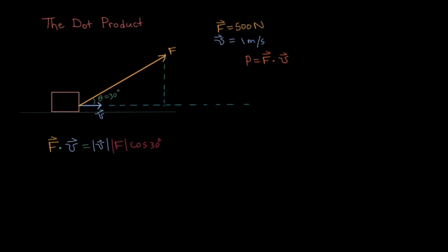The power, F dot v, is equal to v times F cos theta. In this case, theta is 30 degrees. Putting our numbers in, we get 433 watts.